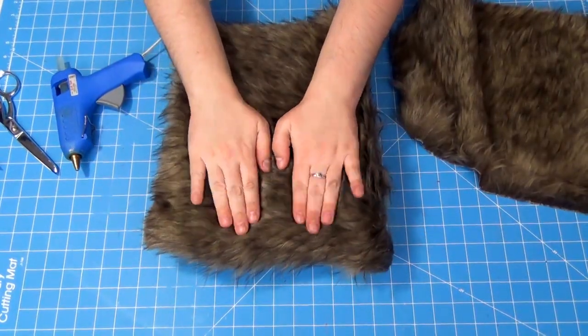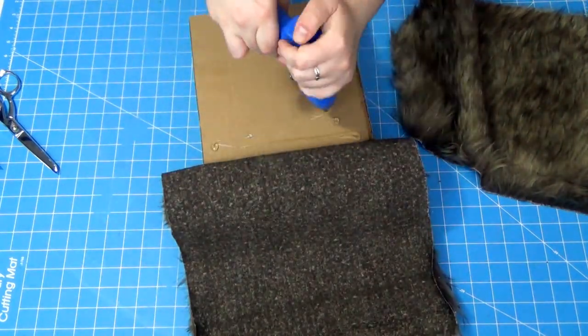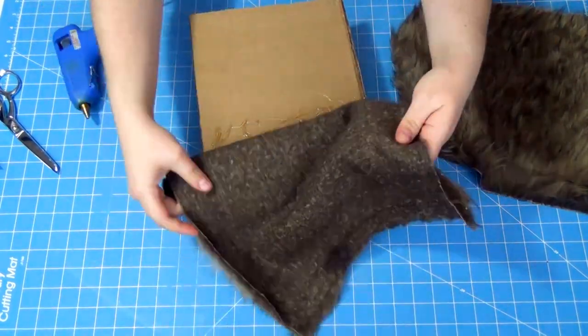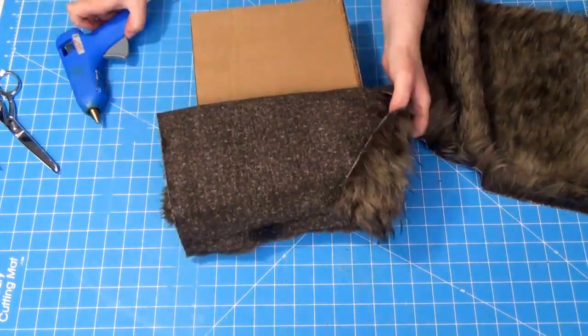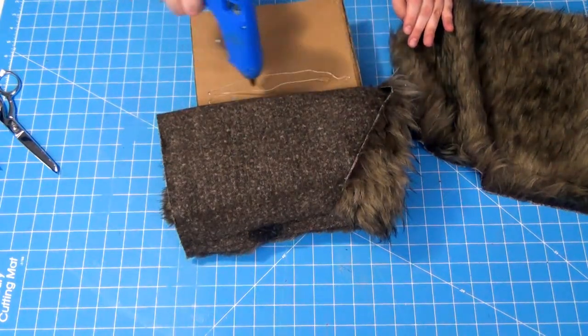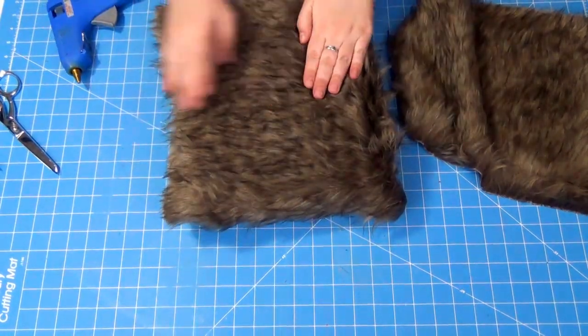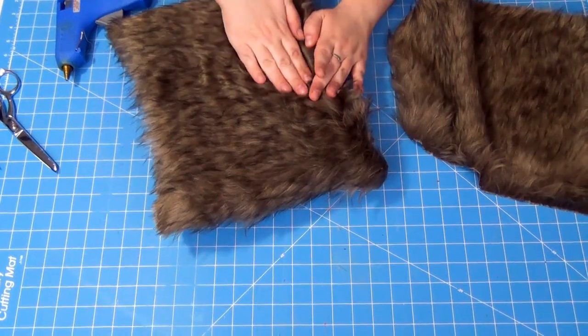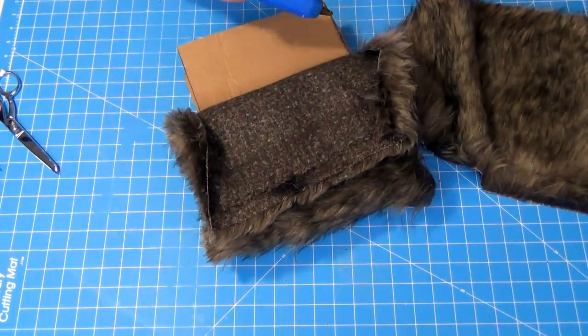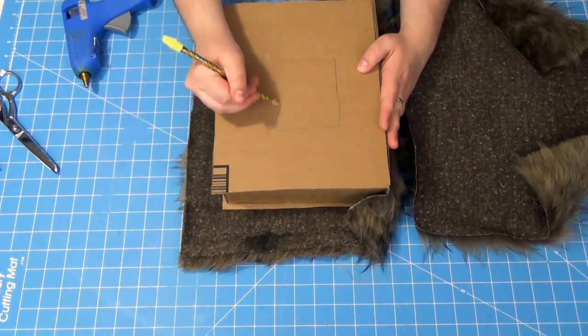Starting with the back, glue the fur to the cover and spine using hot glue. Glue a few inches at a time because the glue dries fairly quickly. Press it down as you go. Make sure the fur goes at least halfway down the spine as well and still drapes off the edges.